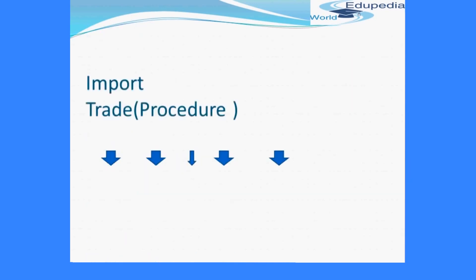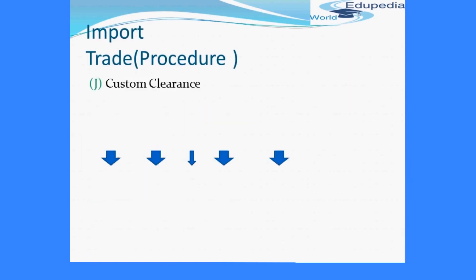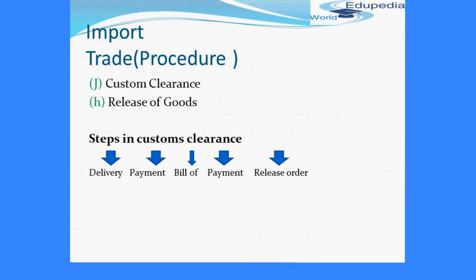The next step in the process is customs clearance and release of goods. In India, delivery of imported goods can be taken only after customs clearance. The steps in customs clearance begin with a delivery order — when the ship arrives at the port of destination, the importer obtains endorsement of delivery on the back of the bill of lading or a delivery order from the shipping company, which entitles the importer to take delivery of goods.